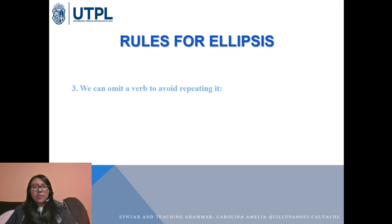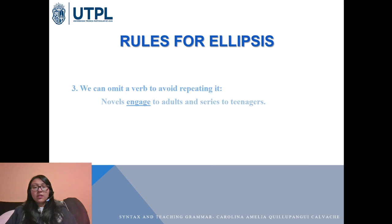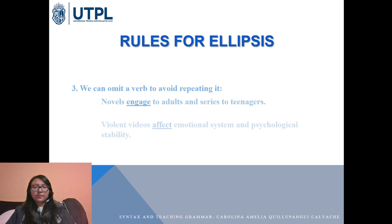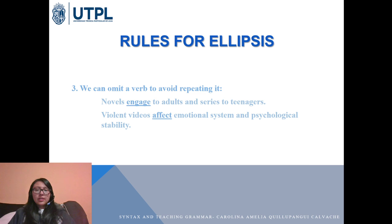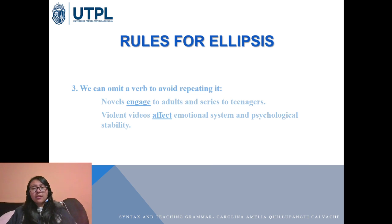Third, we can omit a verb to avoid repeating it. For example: 'Novels engage adults, series teenagers' — we can omit 'engage' the second time because the meaning is still clear. It is not necessary to say 'engage' twice. Similarly, 'Violent videos affect emotional system and psychological stability' — we omit the second 'affect' because it is understood.